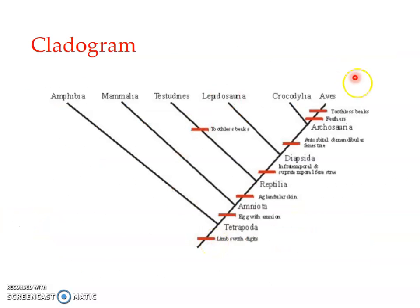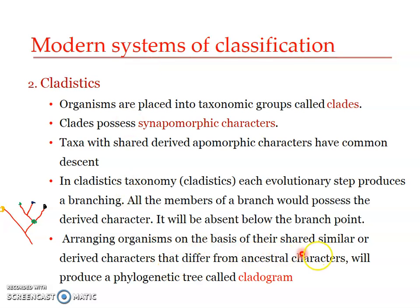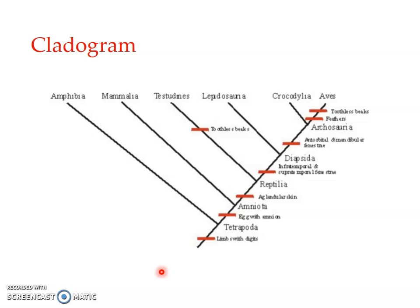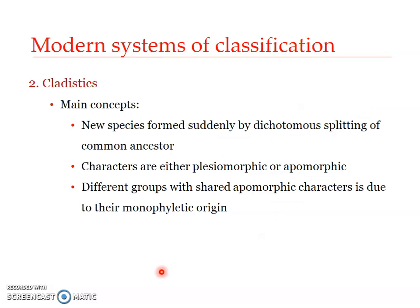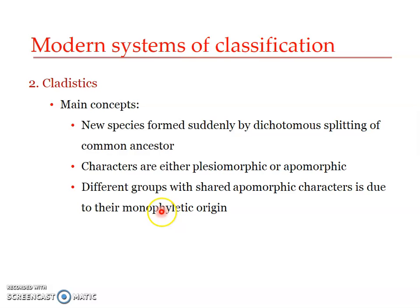This figure, developed based upon the study of phylogenetics, is what is referred to as a cladogram. Arranging organisms based on their shared derived characters that differ from ancestral characters produces a phylogenetic tree — a branched graphical representation of how species have evolved. The main concepts of cladistics are: new species are formed suddenly by dichotomous splitting of a common ancestor; characters are either plesiomorphic or apomorphic; different groups with shared apomorphic characters — that is, synapomorphic characters — indicate monophyletic origin, meaning they have a common ancestor.